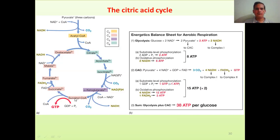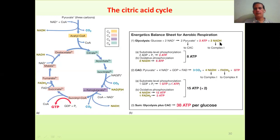This C4 compound keeps on converting from one molecule to another and what we get back is oxaloacetate. In this process, one FADH2 and NADH are produced. Looking at the energetics balance sheet — how many ATP molecules are generated — in glycolysis, 2 pyruvate molecules are generated which enter the Krebs cycle, 2 ATP molecules are generated, and 2 NADH are generated.